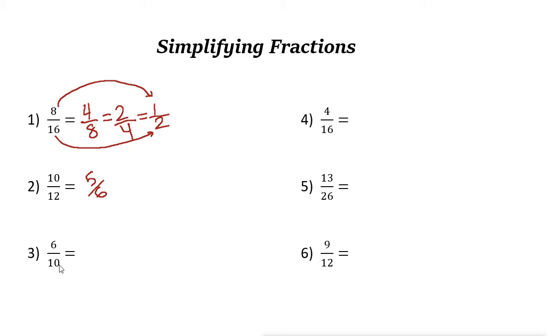Next one, 6 over 10. Both are even numbers, so you can divide them by 2. 6 divided by 2 is 3, and 10 divided by 2 is 5. 3 over 5 is the simplified form of 6 over 10.